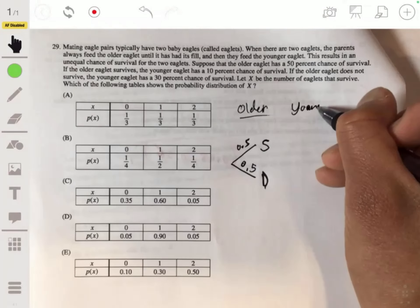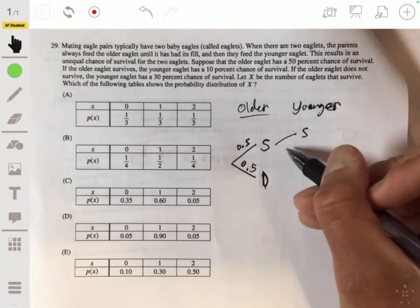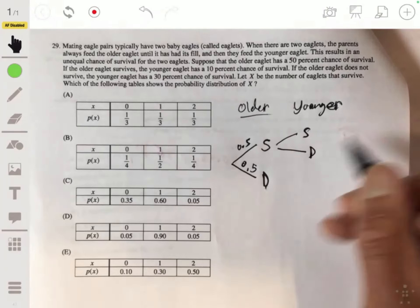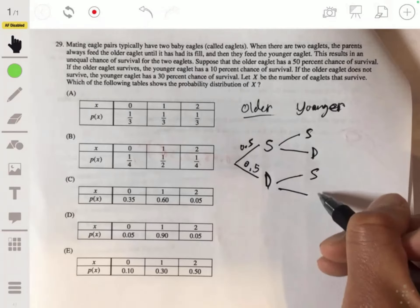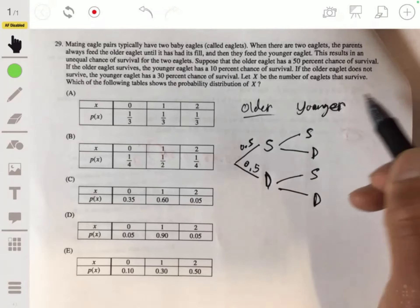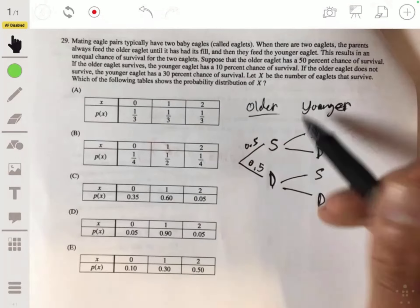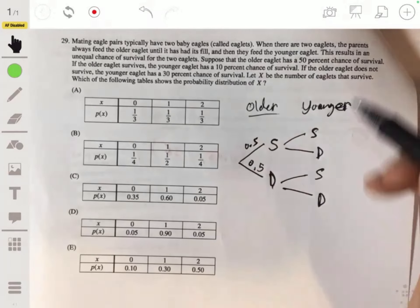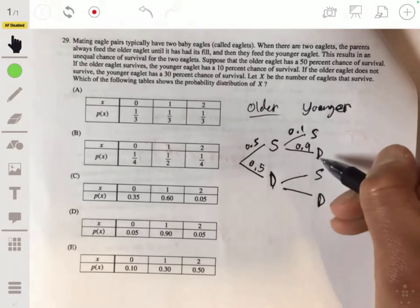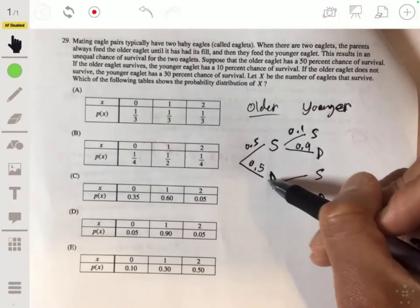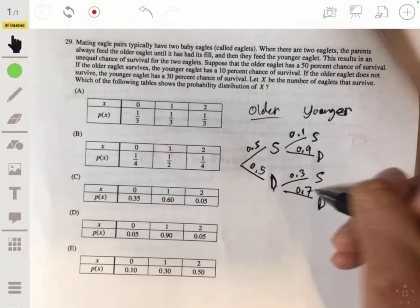50% chance that the older eagle dies or survives, 50-50. Now the younger one is going to be the next branch. So it's also possible that they survive and it's also possible that they die. And that goes for both. The first one could die, the older one could die, and the younger one could survive or die. Now if the older eaglet survives, which is this branch, the younger eaglet only has a 10% chance of survival. So we put 0.1 here, which means there's a 0.9 there. Now if the older one dies, the younger one has a 30% chance of survival. So 0.3 goes here and a 0.7 goes here.